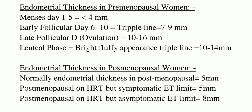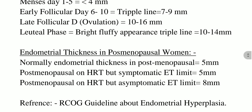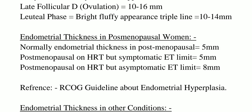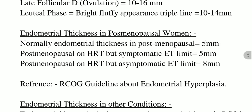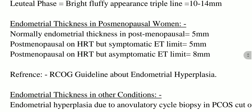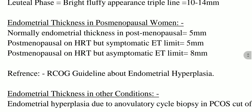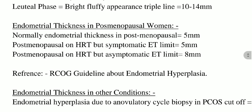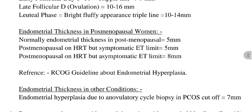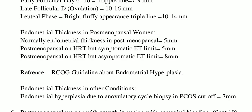We have to consider all these values. The reference is the RCOG guideline on endometrial hyperplasia. We also need to consider endometrial thickness in other conditions — for example, in a patient with PCOS (polycystic ovarian syndrome), the cutoff value is 7 mm.